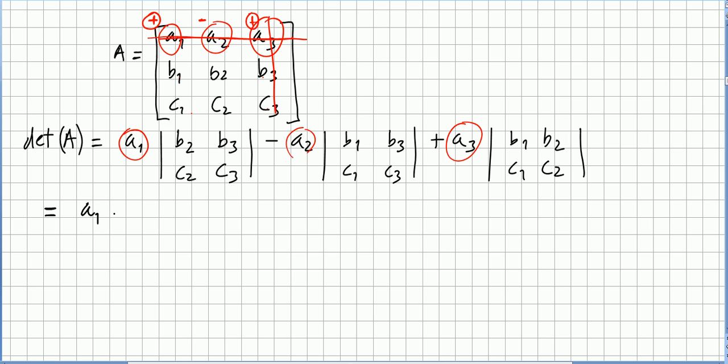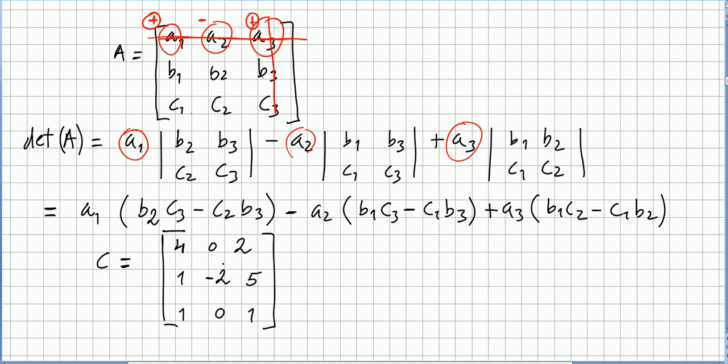So this will be A1. And here. Now you take the previous algorithm for the 2x2 matrices. So that will be B2, C3 minus C2, B3. Here. Minus A2 times the determinant. This determinant. This is the sign for determinant. B1, C3 minus C1, B3. Plus A3, B1 times C2 minus C1 times B2.